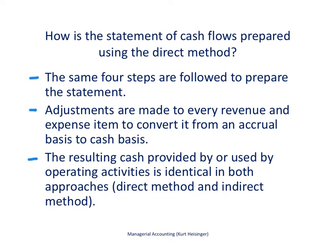As mentioned before, we still follow the same four steps in preparing the statement of cash flows. It is just the very first step — preparing the operating activities section — that differs. Using the direct method, adjustments are made to every revenue and expense item, basically to convert each item from an accrual basis to a cash basis. The result is that the cash provided by, or used by, operating activities is identical. It does not matter if we use the direct method or indirect method — the end result will be the same.